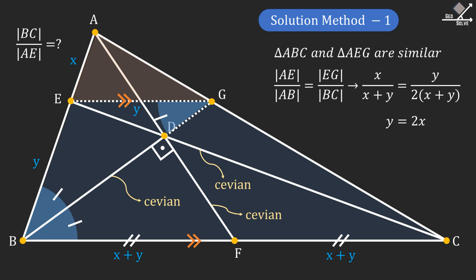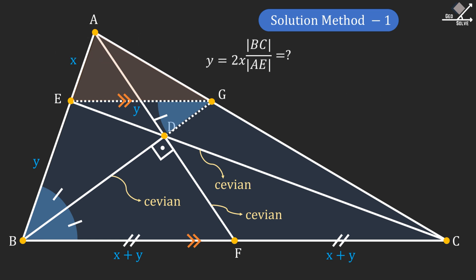The value we were looking for was BC over AE. If we put the values in, we will have 2 times X plus Y over X. Since we know that Y equals 2X, we can write 2X instead of Y in the equation. And from here, our answer will be 6.